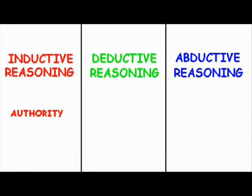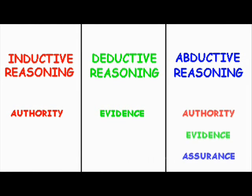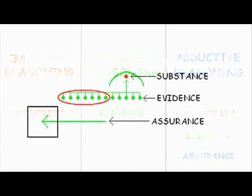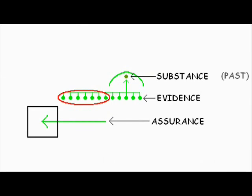Within abductive reasoning, we find our own miniature scientific method that uses all three forms of reasoning. The strength of a claim relies on how well it was substantiated in the past. That is what determines whether we give it any inductive authority to begin with. The evidence that it provides gives us power of deduction in the present, and the assurance that it provides is what assures us that it will continue in the future.